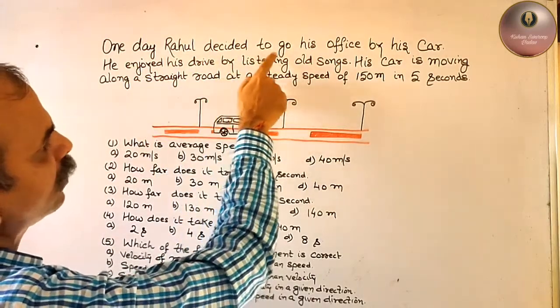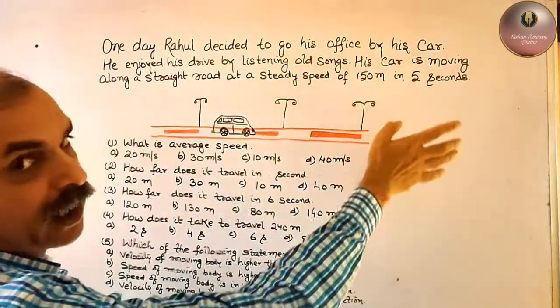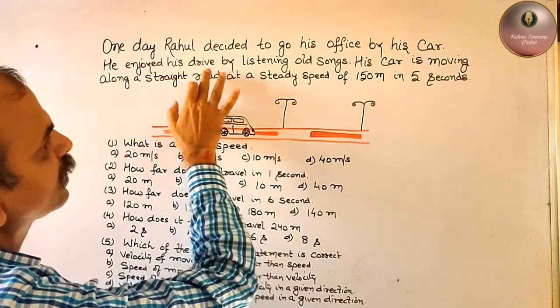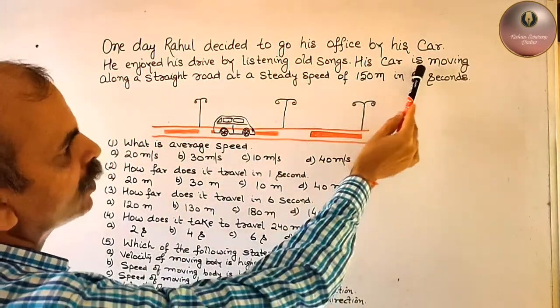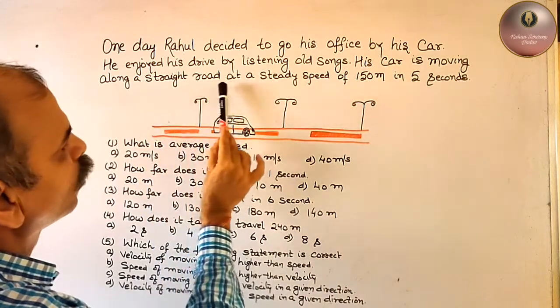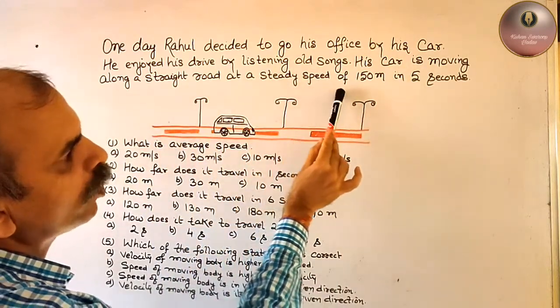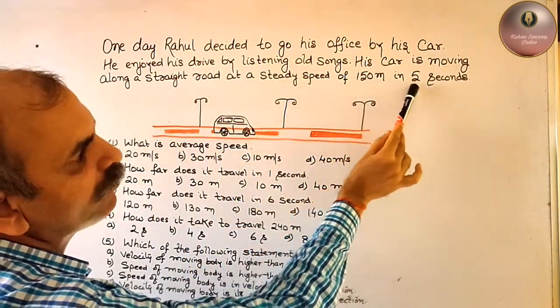One day Rahul decided to go to his office by his car. He enjoyed his drive by listening to old songs. His car is moving along a straight road at a steady speed of 150 meters in 5 seconds.